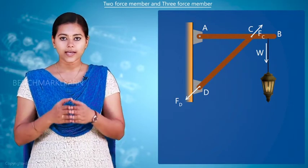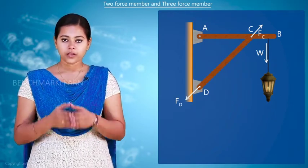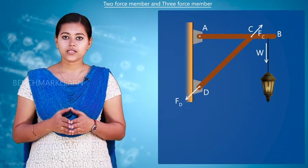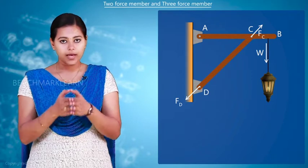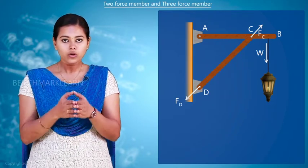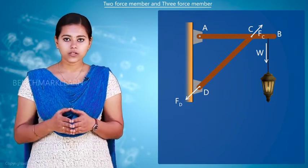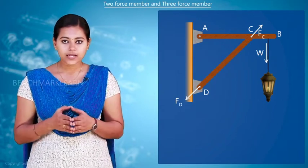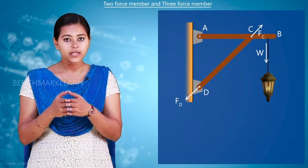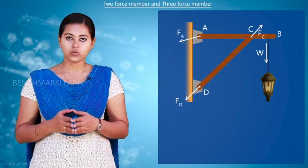Now let's take the case of member AB. Here there are three forces acting as shown. The weight W will be acting downwards. Force at C can be resolved into its vertical and horizontal components. So to balance the forces at C and B, the force at A will be acting as shown.